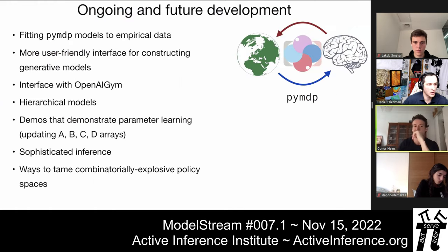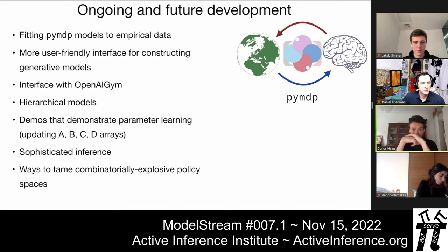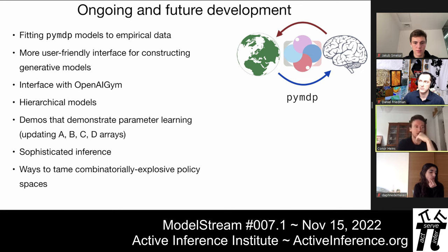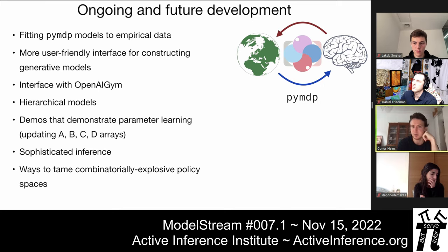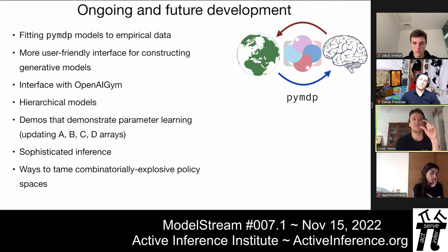Looking at future directions for PyMDP: one major goal is fitting PyMDP models to empirical data. There's a lot of interest from the computational psychiatry community in creating active inference models of human behavior, and one of the current limitations is that people can't yet use PyMDP to infer active inference parameters from empirical data.